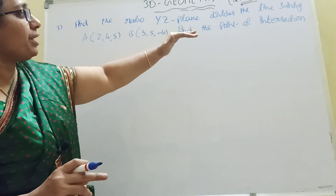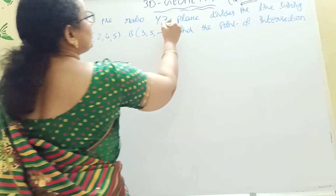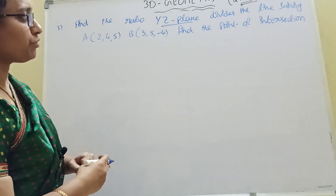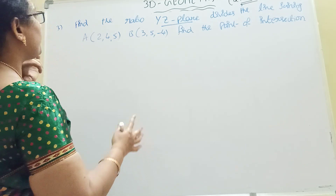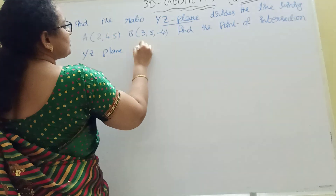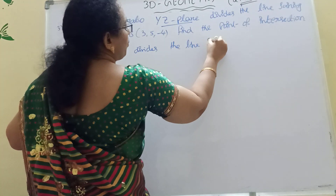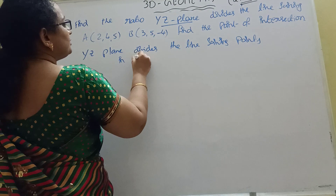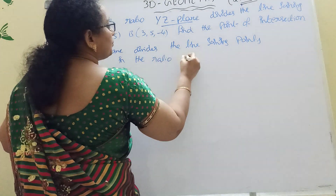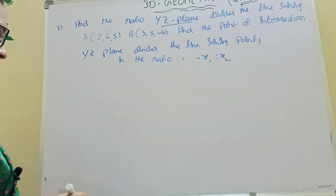Find the ratio in which the YZ plane divides the line joining the points. Then find the point of intersection. Here is the YZ plane. YZ plane divides the line joining points. It is the YZ plane. The ratio formula is minus x1 to x2.